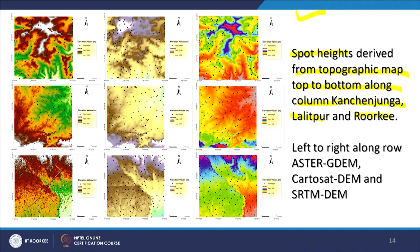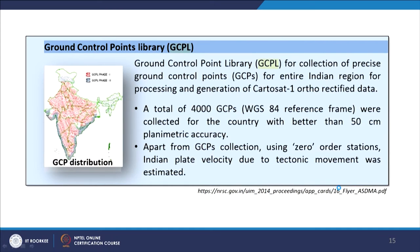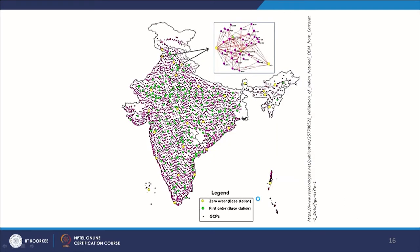Three digital elevation models were compared: Aster DEM on the left, Cartosat DEM in the middle, and SRTM — all at 30-meter spatial resolution. The GCP library from NRSA, having about 30,000 ground control points spread across India except some parts of J&K, was used to validate and find errors in the Cartosat DEM generated by NRSA.